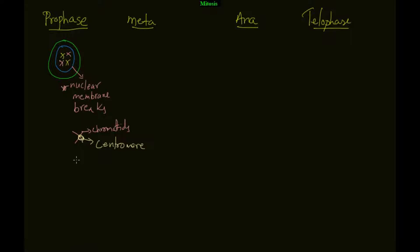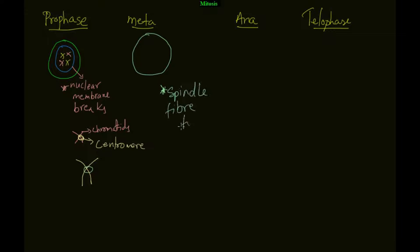These are the basic things you have to understand. Now let's go to metaphase. In prophase the nuclear membrane breaks down, and in metaphase, when the nuclear membrane breaks, it forms fiber-like structures at the two poles of the cell.